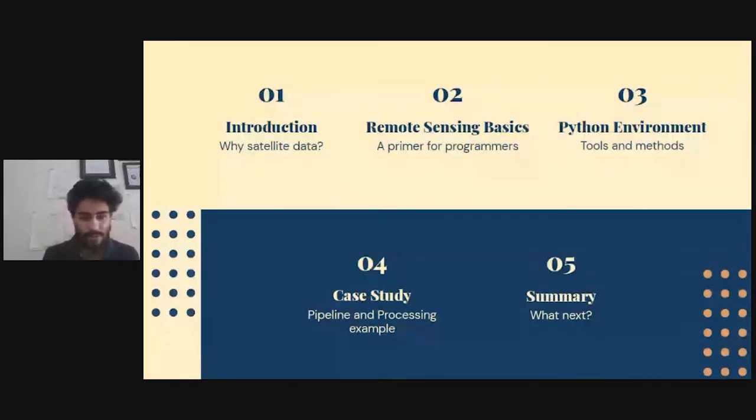I'll start with introducing why you would want to go for satellite data. Then we'll move on to a small primer for remote sensing. In part three, I'll be talking about the Python environment for satellite images, tools and methods, and introducing Earth Engine as the API. In part four, I'll give a short case study to talk about the end to end pipeline. And finally, in part five, I will be concluding.